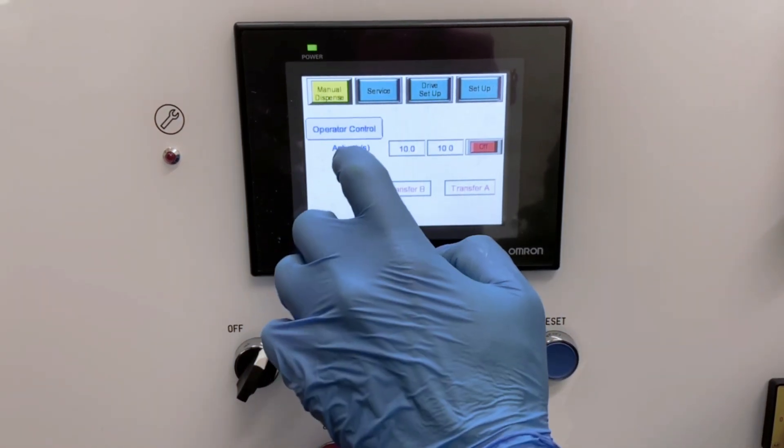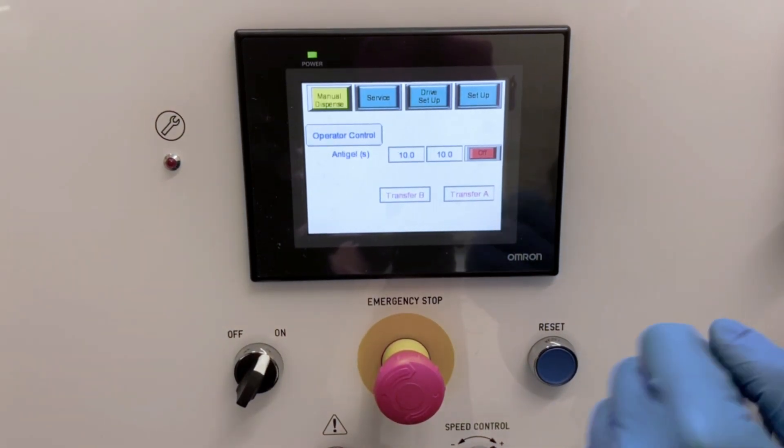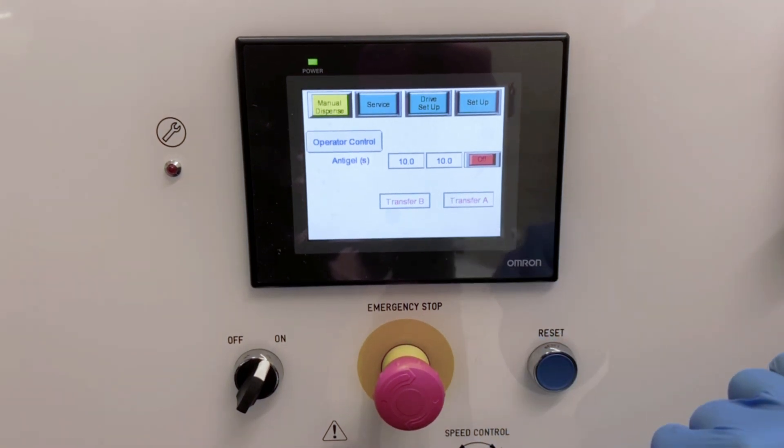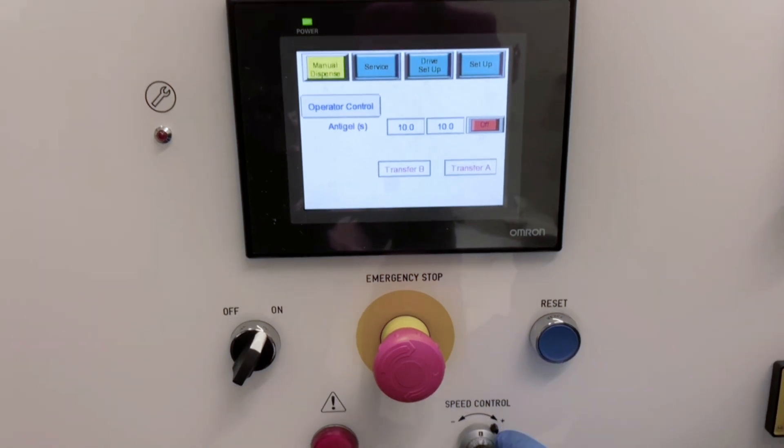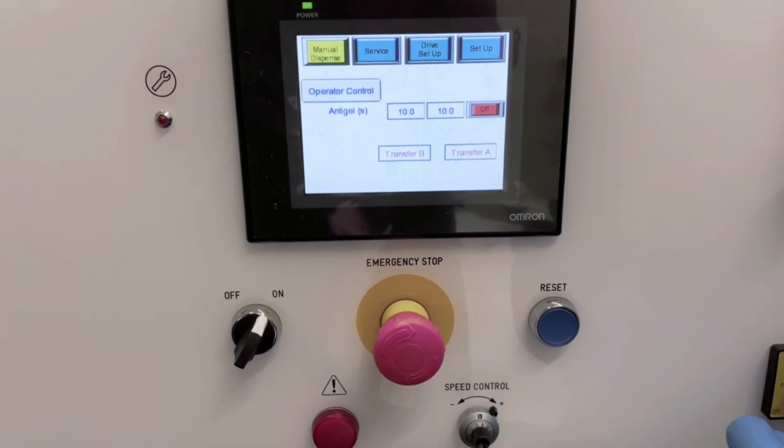Or if the operator would like to start and stop with the foot pedal, then you can switch it over to operator control and still use the same speed control with the potentiometer.